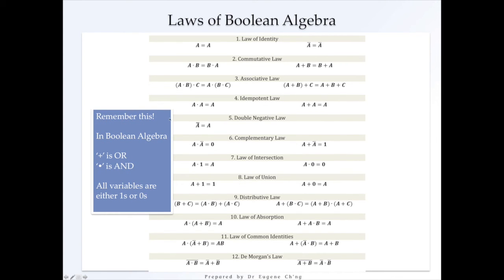But remember this, this is different from normal algebra. This is Boolean Algebra, which means that the plus is an OR, the dot is an AND, and all variables are either ones or zeros.